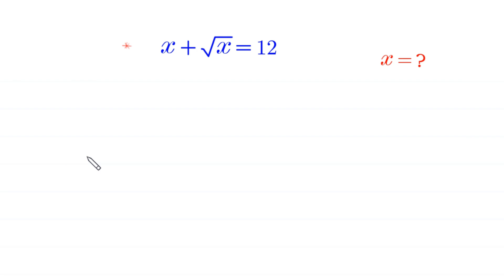Hello everyone, you are welcome to how to solve this very nice radical equation. x plus square root of x is equal to 12. Our job is to find all possible values of x.